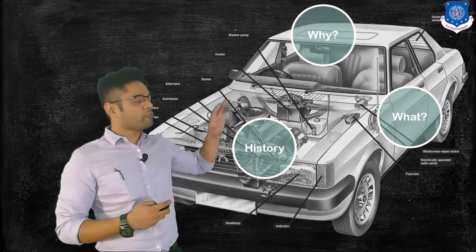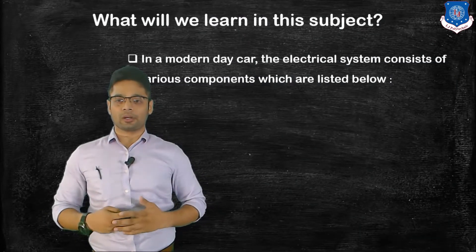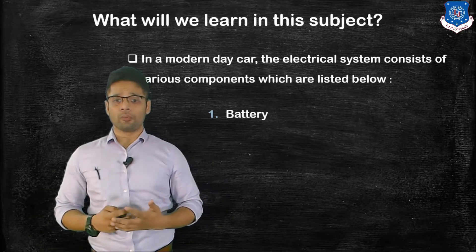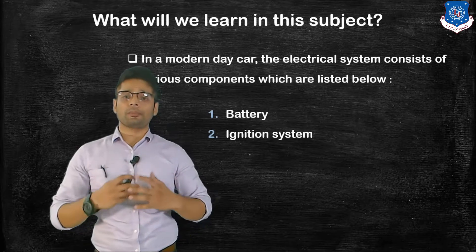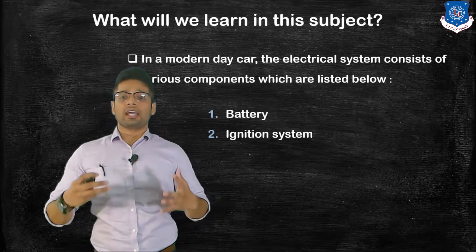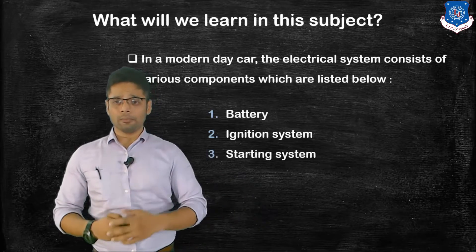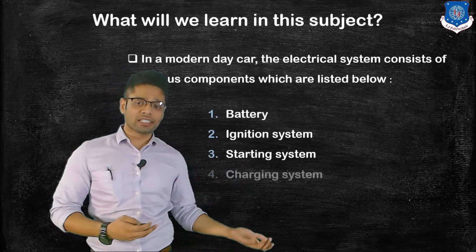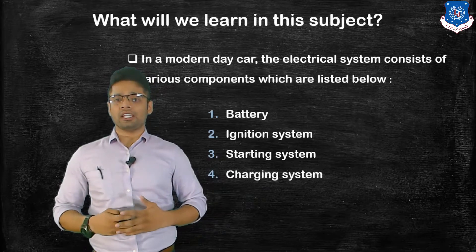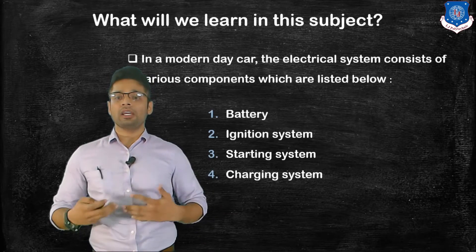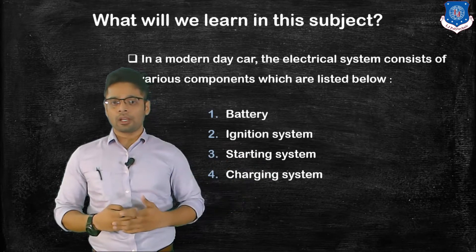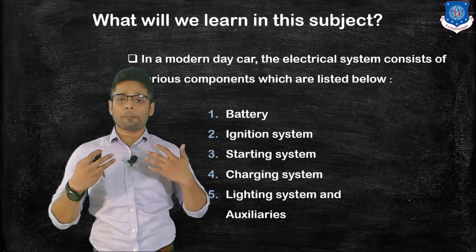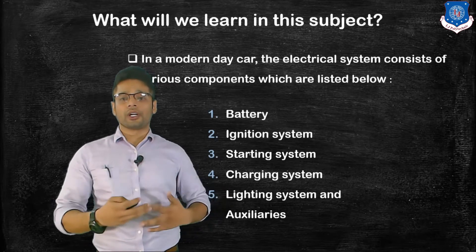In the modern day automobile, some of the major components which we will be learning in this subject are: battery, which is the power source of all the electrical systems in the automobile; ignition system, which is responsible for the combustion of fuel in an internal combustion engine; starting system, which is responsible for rotating the flywheel to start the engine without any manual cranking; charging system, which is used to charge the battery continuously so that the battery can power the electrical system for a very long time; and lighting and auxiliary systems, which include all the extra devices provided in the car for easier operation.